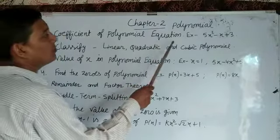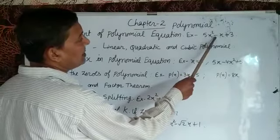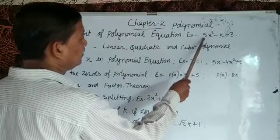To find the coefficient of the polynomial equation, for example, 5x² - x + 3, the coefficient of x² is 5.